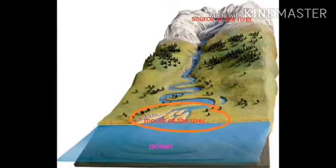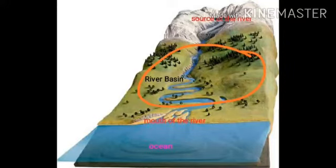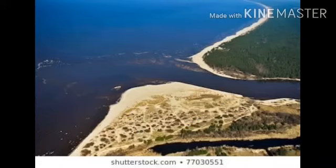The area which is drained by a river — you can see the marked region — is called a river basin.